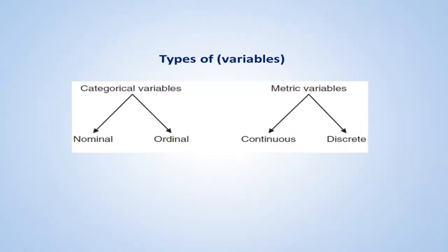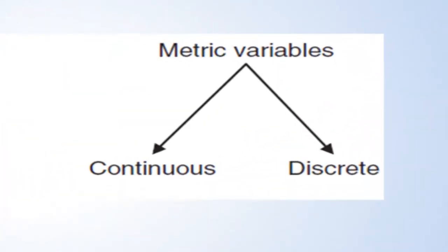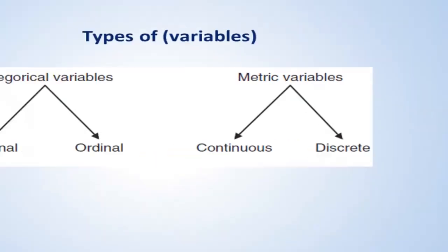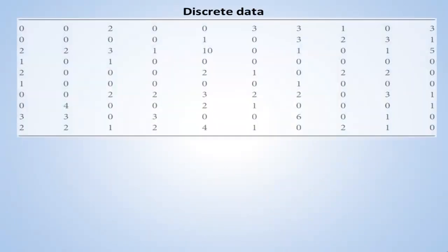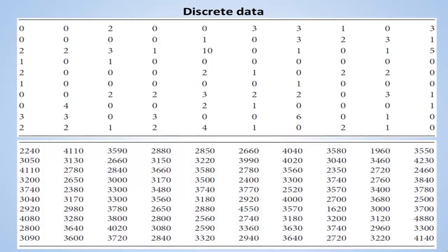The second type of data is metric data. It's divided into two types: continuous metric data and discrete metric data. Let's first talk about discrete metric data. Consider the data in this figure - this shows the parity of mothers of babies whose birth weights are shown in the second one. Parity, by the way, is the number of pregnancies.